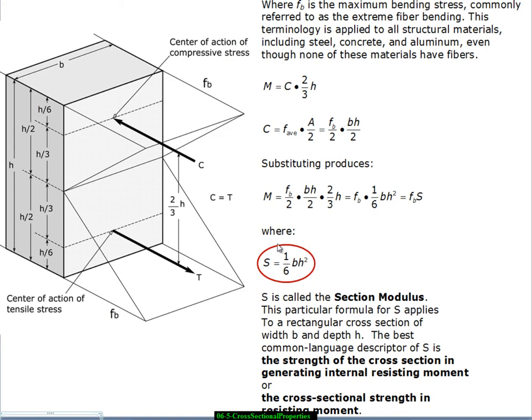And in fact, for many materials, we tabulate for various different sizes and shapes what the section moduli are. So in fact, you can, knowing M and the stress limit, you can go find a section modulus and out of the tables grab a member. S is called the section modulus. This particular formula applies to rectangular cross sections of width B and depth H. Any other cross section has a different formula. So this would apply to solid sawn lumber, for example, but would not apply to a wide flange I-beam. The best common language descriptor of S is the strength of the cross section in generating the internal resisting moment or the cross sectional strength in resisting moment.